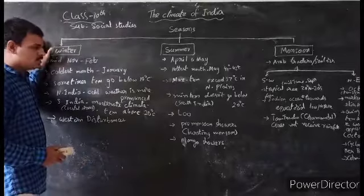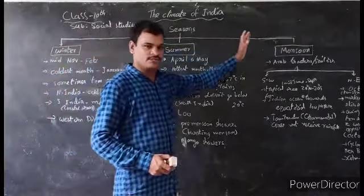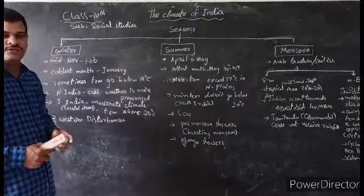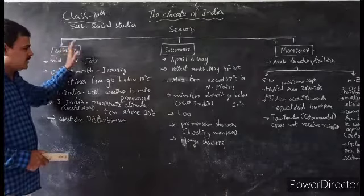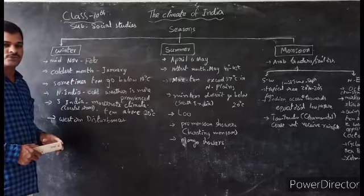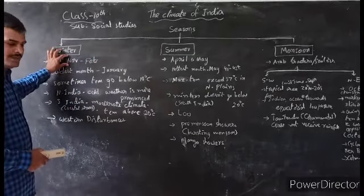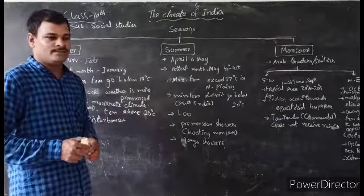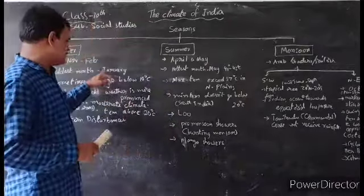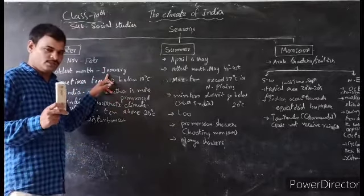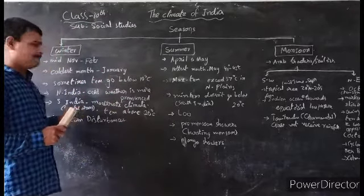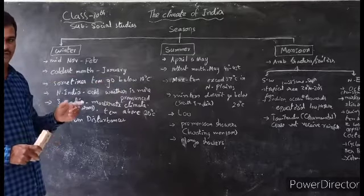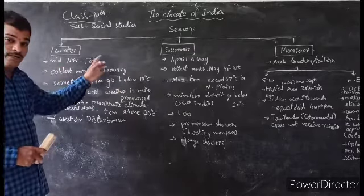What about winter? Temperatures start reducing from mid-November until February — this winter continues. The coldest month in winter is January. Particularly in North India, there is very cold climate; sometimes the temperature goes below 10 degrees.